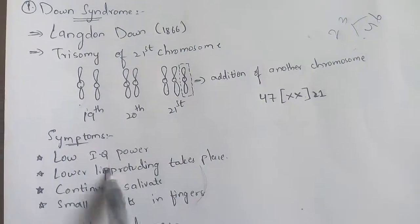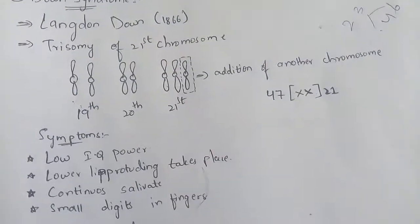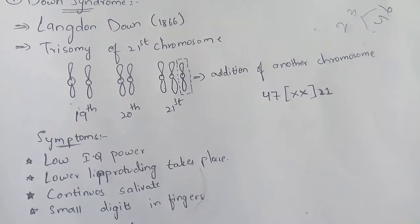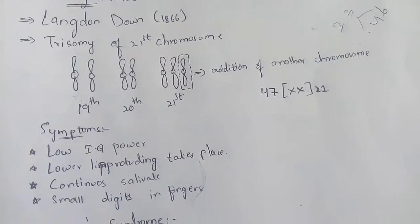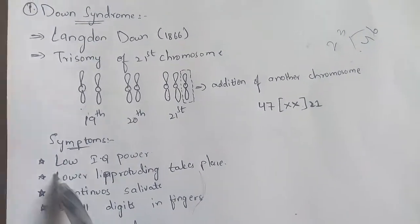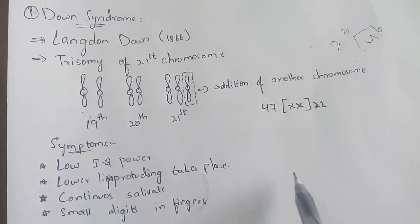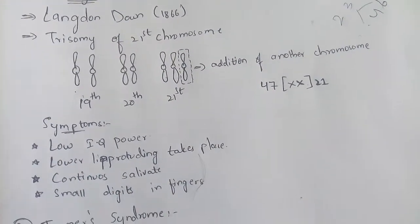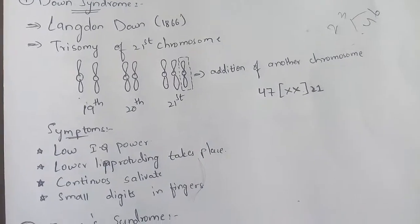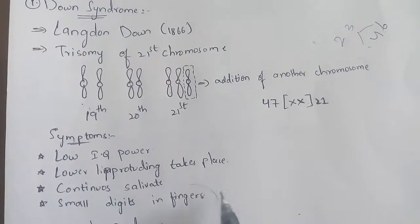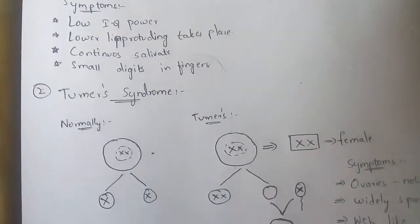Let us know the symptoms seen when a person has Down syndrome: low IQ, and the lower lip protrudes — the lower lip will be thick and falls downward, becoming bulged, and continuous salivation will be exhibited from their mouth. There are also small digits in the fingers. All the symptoms will be shown in the last picture of this video.